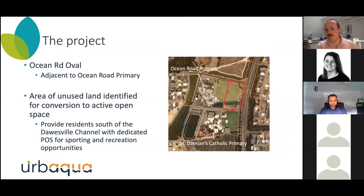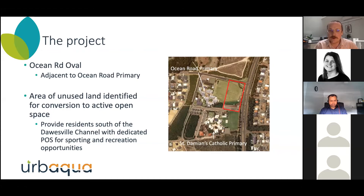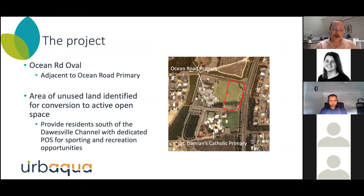The big limiting issue in getting this project over the line was finding a water source that could be used to irrigate the public open space and maintain it throughout the year, because water is a big issue in Perth and WA — we don't have a lot of it readily available. So we had to identify a water source that was sustainable and affordable for the expansion of Ocean Road Oval. The BCA was applied specifically to finding a water source for the irrigation of the oval.